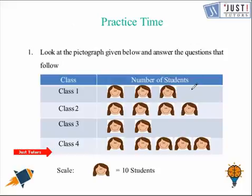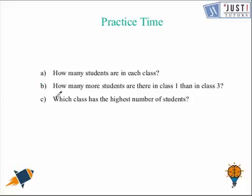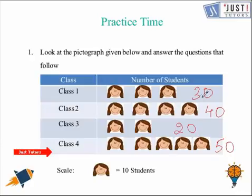class 3 represents 20 students, and class 4 represents 50 students. So on the basis of this pictograph, we need to answer this question. So how many students are there in each class? That we have already mentioned here, that in class 1 it is 30, in class 2 it is 40, in class 3 it is 20, and in class 4 it is 50 students.